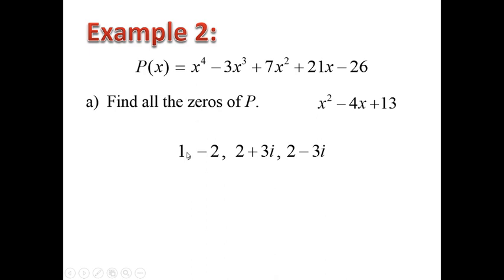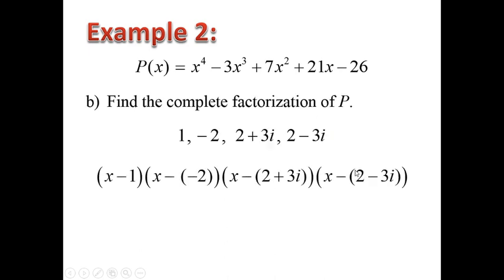As you can see, all the solutions we found through the divisors are: 1, negative 2, and then the complex solutions 2 plus 3i and 2 minus 3i. We rewrite the complete factorization as x minus 1, times x minus negative 2, times x minus the quantity 2 plus 3i, times x minus the quantity 2 minus 3i. As you may know, complex solutions always come in conjugate pairs for the factorization.